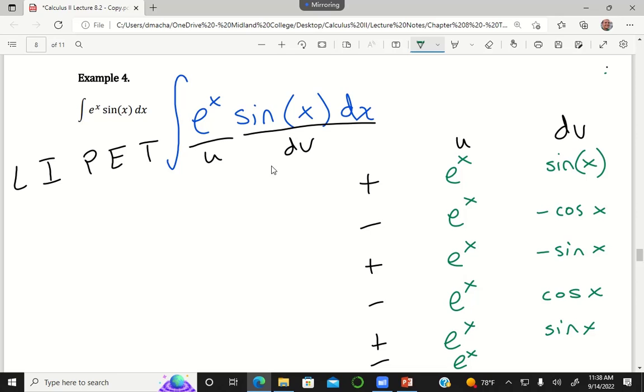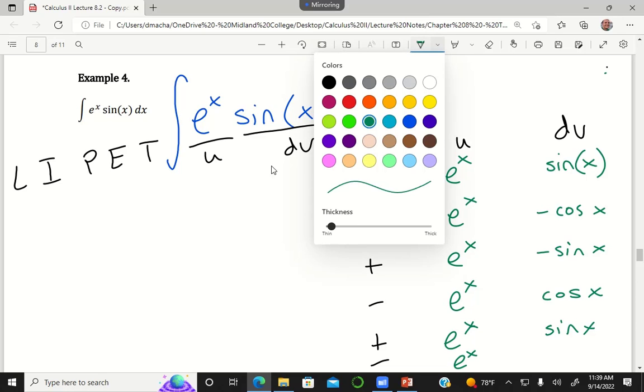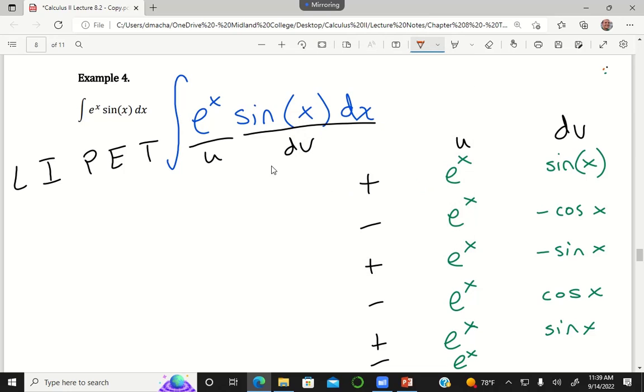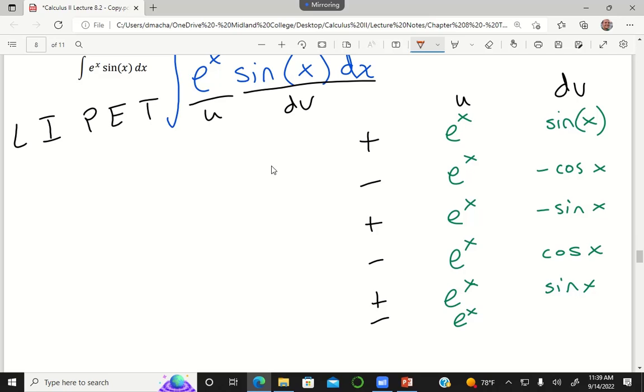Once I end up with the first row again, notice this row is e to the x times sine of x and the top row is e to the x and sine of x side by side, then I can stop. That's the point where I'm okay with stopping. So I'm going to draw my snakes.